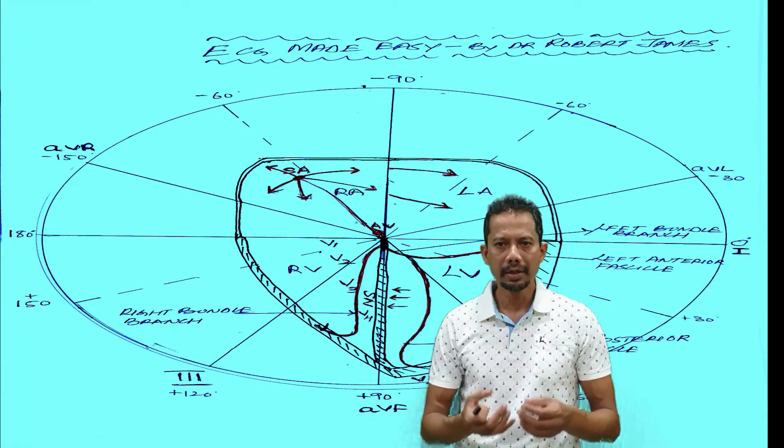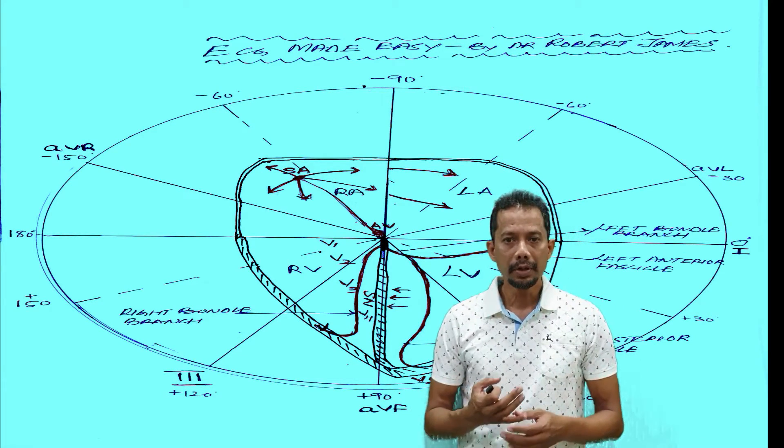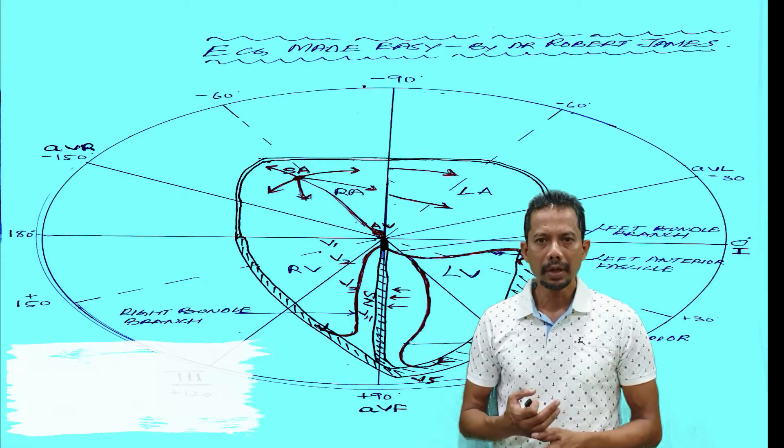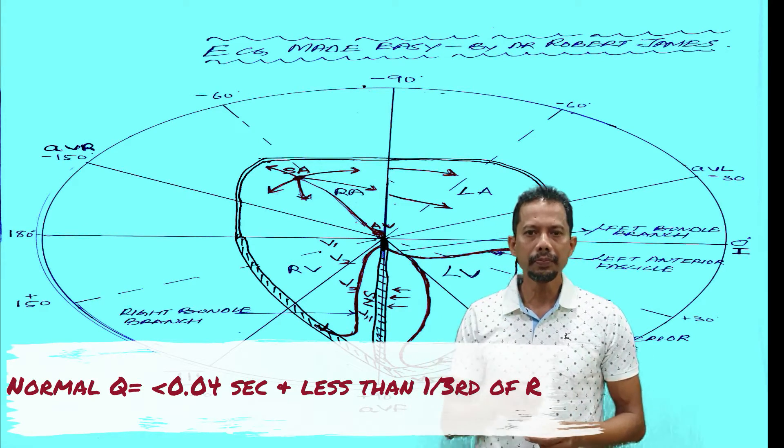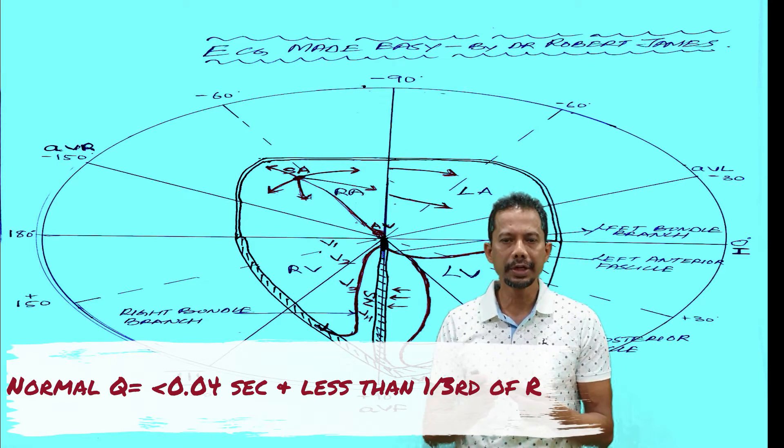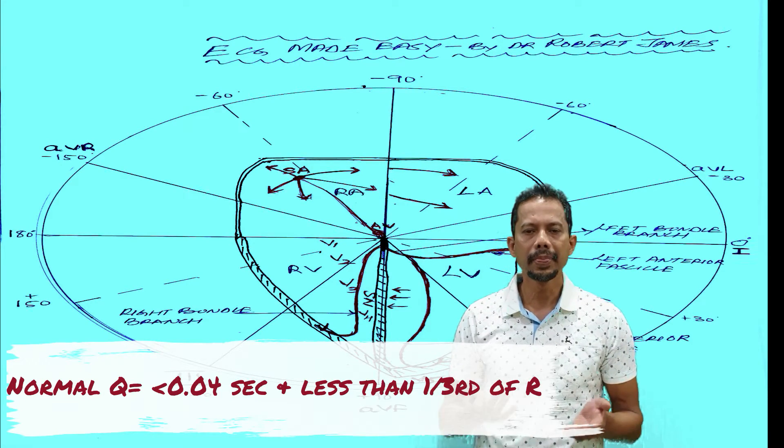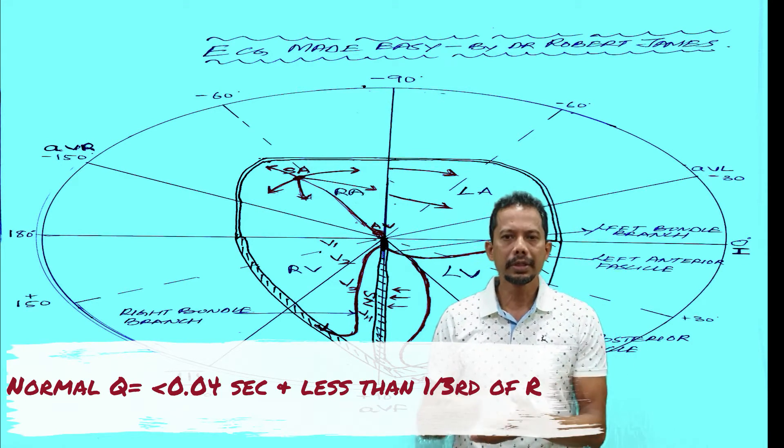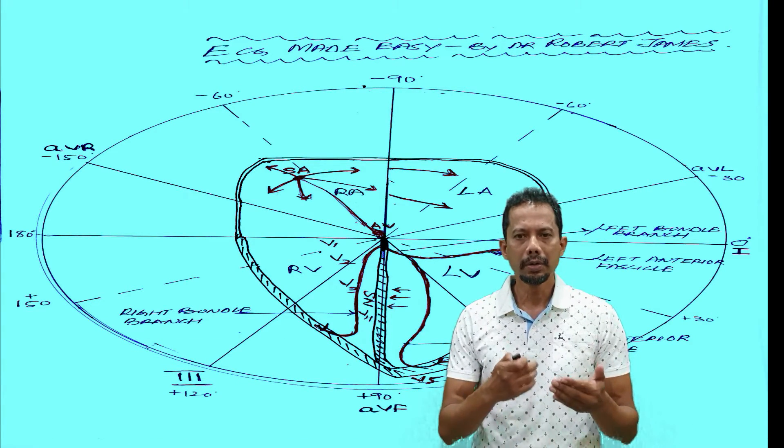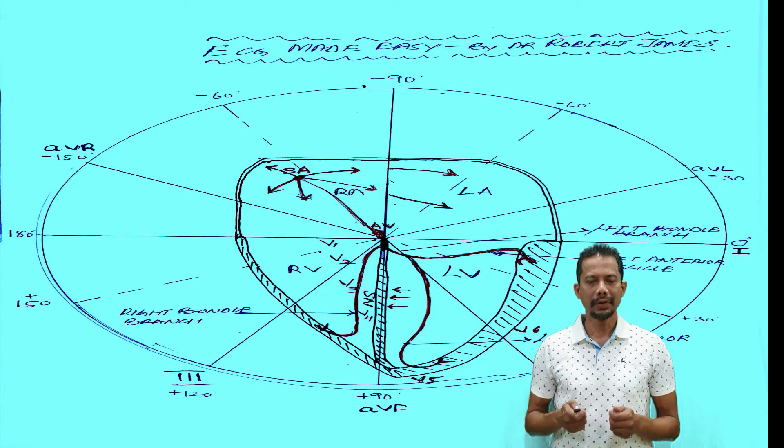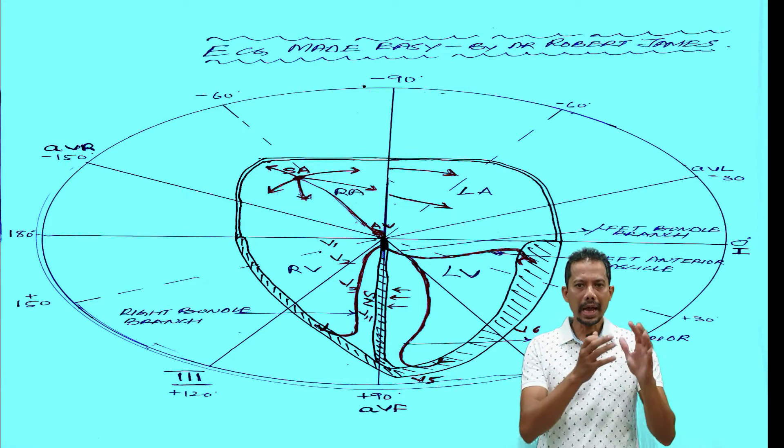It is a normal healthy q wave in the lateral leads. This is very important. You can get a short MCQ question whether this is a pathological q or a normal q. A normal q wave will be denoted by a small q. It will be less than one small square in duration and it will be less than one third of the R wave.